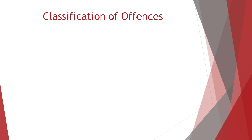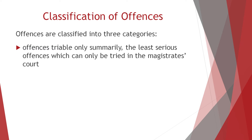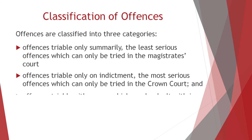Offences are classified into three categories: offences triable only summarily — the least serious offences, which can only be tried in the Magistrates' Court; offences triable only on indictment — the most serious offences, which can only be tried in the Crown Court; and offences triable either way, which can be dealt with in either court.